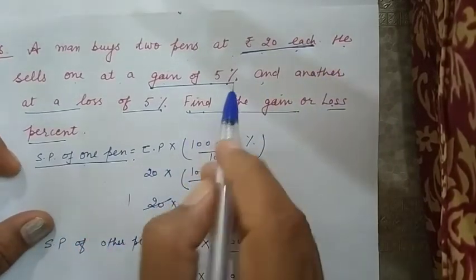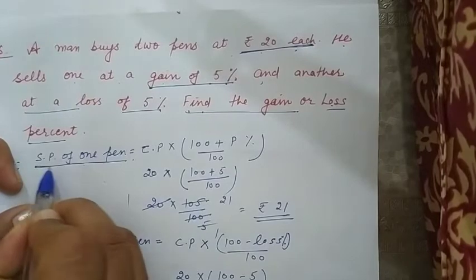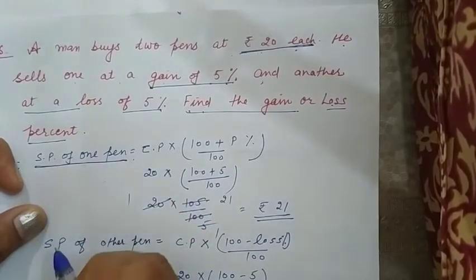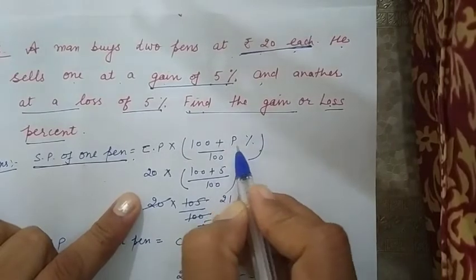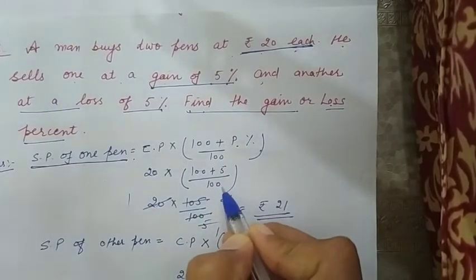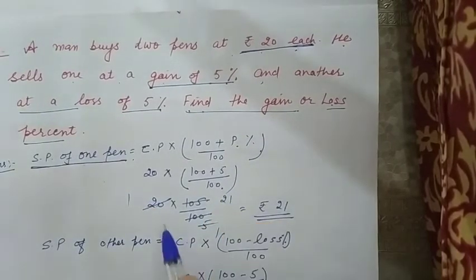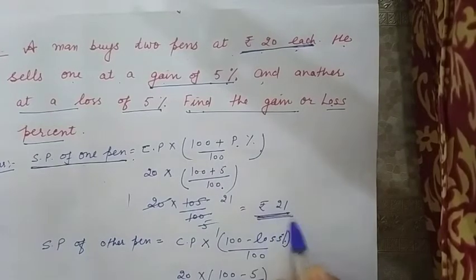Jho aapne 5% profit per beseja. Toh uuska selling price kitna hai? Yeh hume bata na hai pahele. Toh yeh formula apply kertte hai. 5% profit per beseja. Toh yaha haa haa fill kar dheengi iski value. Kya ban jayega? Rupiz 21.